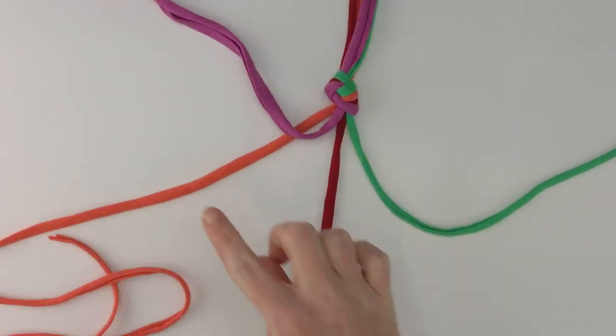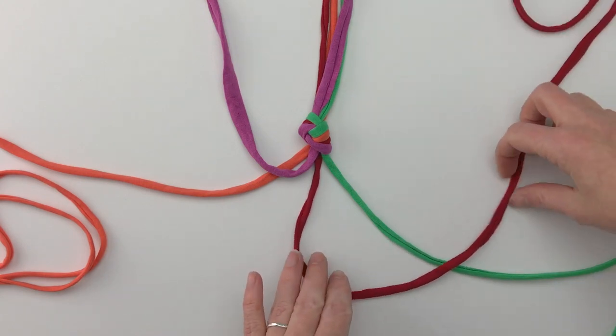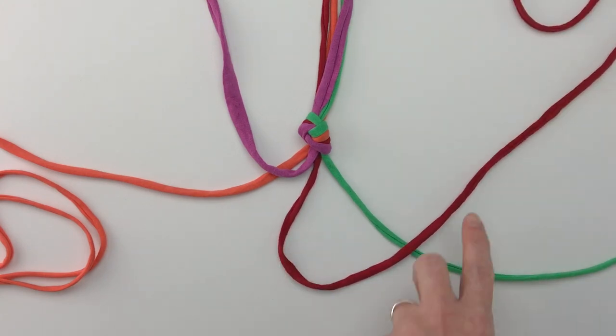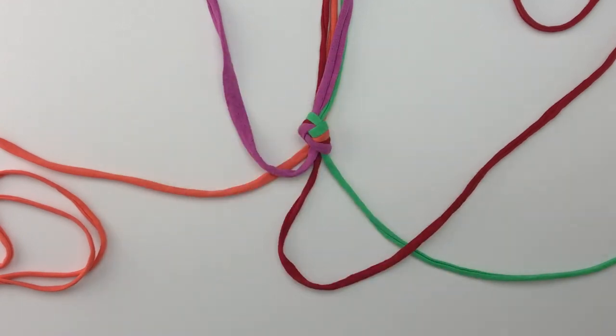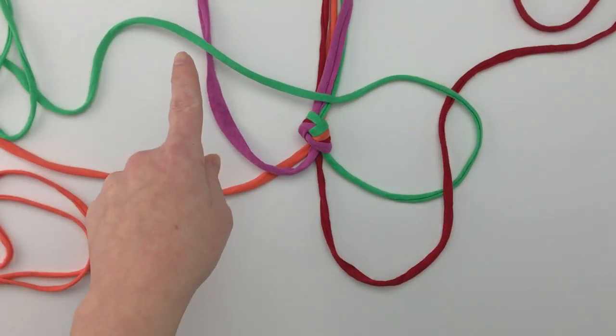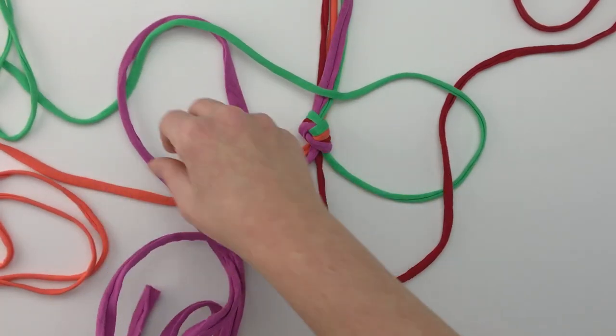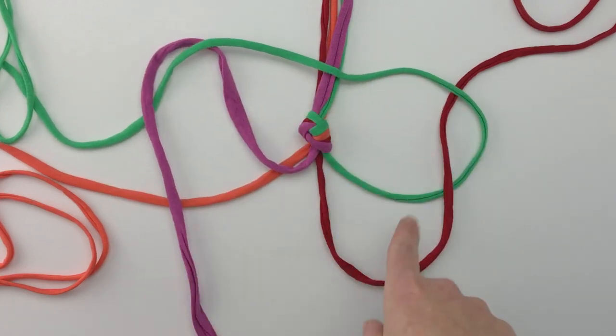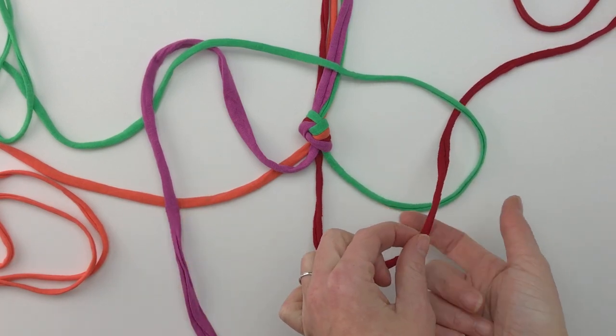We've got our four, one, two, three, and four. We're going to start with our red. And we're going to start by taking our red and placing it over the green. Take our green and place it over the red, but also over the purple. And then we're going to take our purple over the green and over the orange.